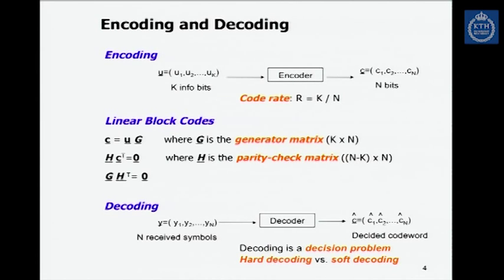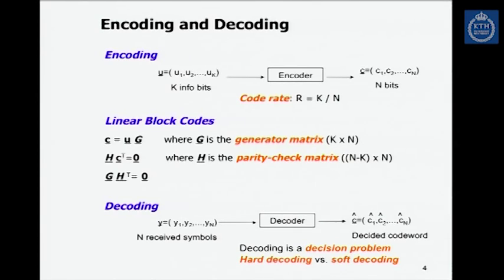Equivalently, all code words must satisfy the equation h times c-transpose equals zero, where h is the parity check matrix, an (n minus k)-by-n matrix. It is related to the generator matrix G via the relation: G times h-transpose equals zero. These are quite elementary aspects about linear block coding.